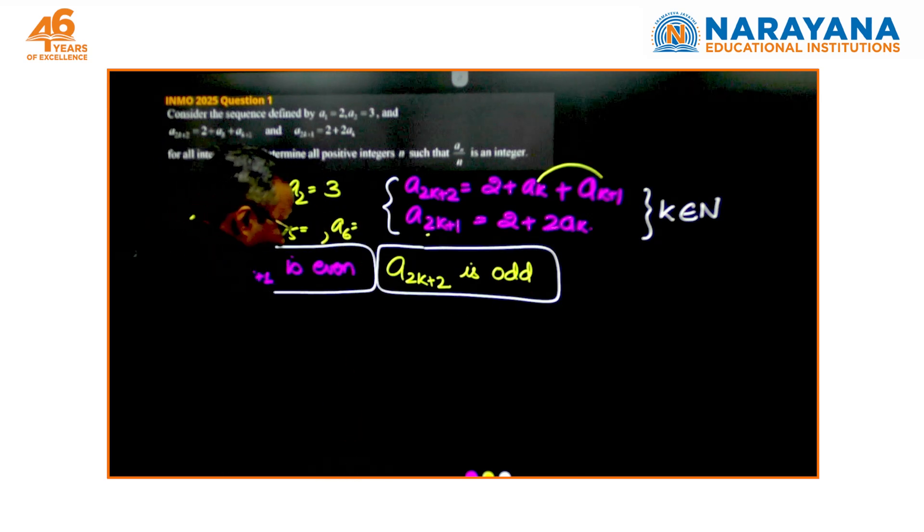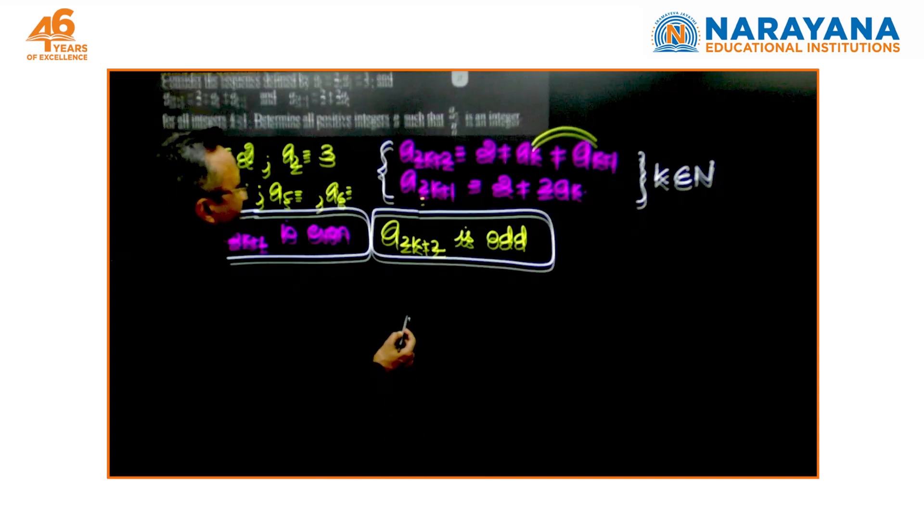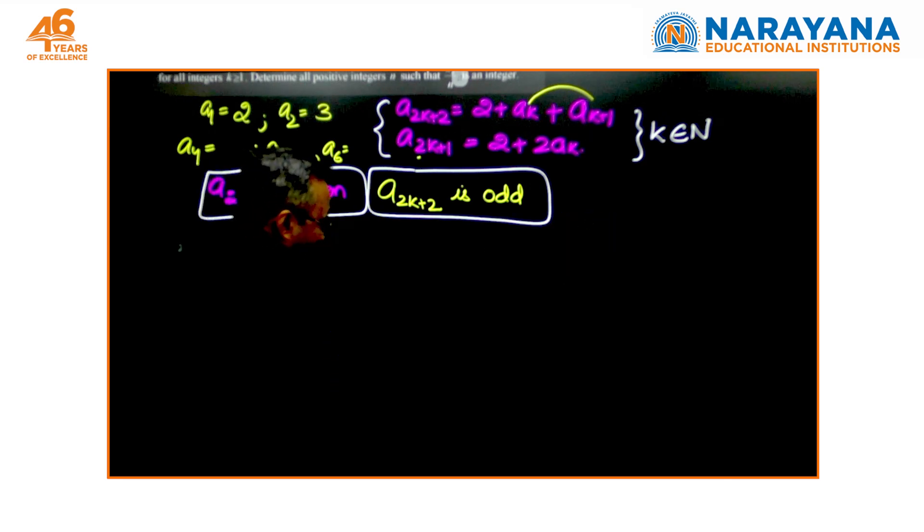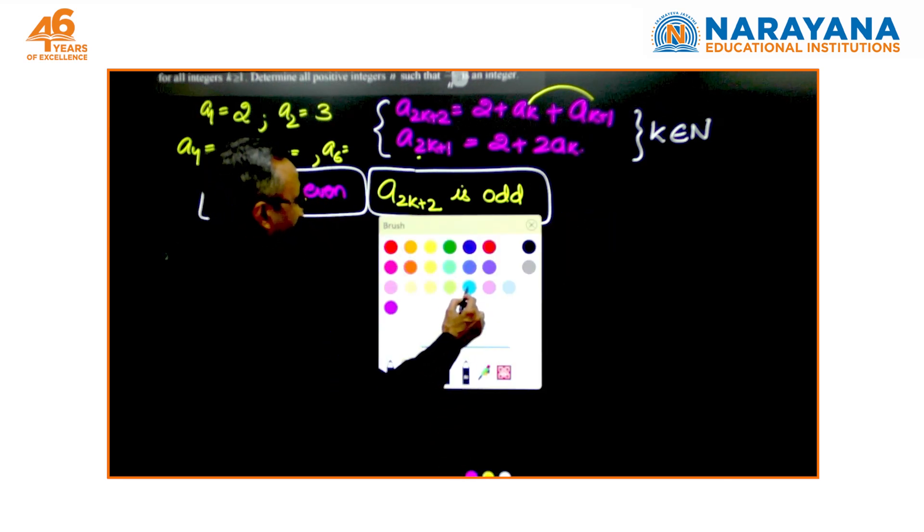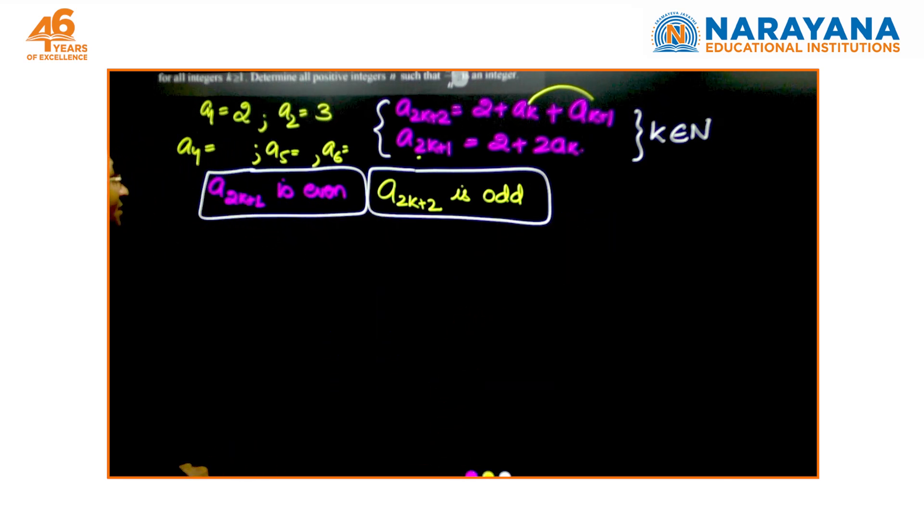We can go through two different or rather three different approaches. One is, let me first try to convert this into a different sequence whereby we get rid of this 2. This is not necessarily what you go through, but this is your option number one.